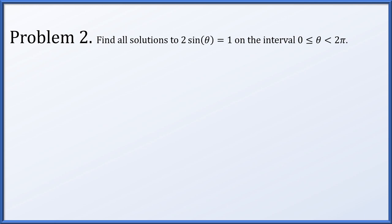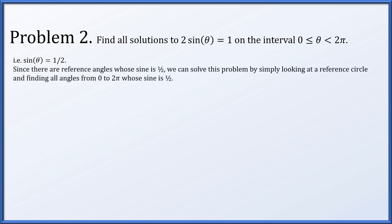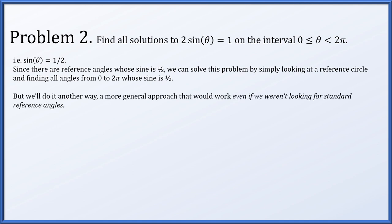In problem 2, we find all solutions to 2 times sine of theta equals 1, where theta is in the interval from 0 to 2 pi, including 0 but not 2 pi. Dividing by 2, we want sine of theta to equal one half. We'll use a more general method that works even when the target value isn't a standard reference angle — for instance, if we needed sine of theta to equal one third.